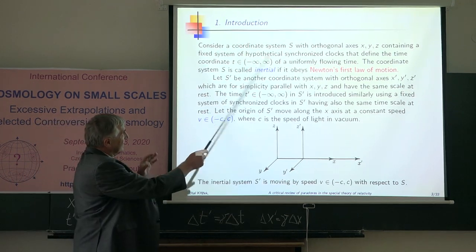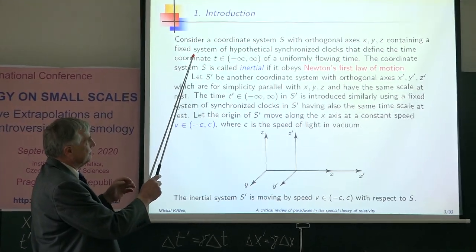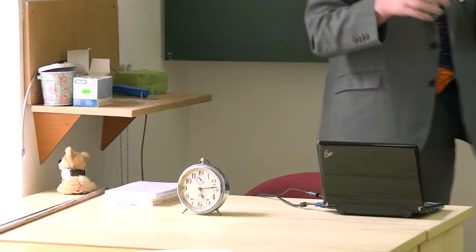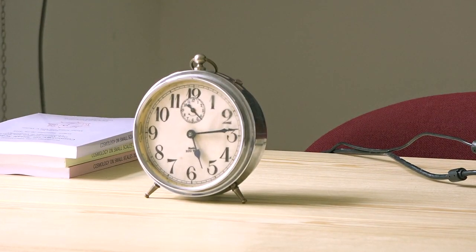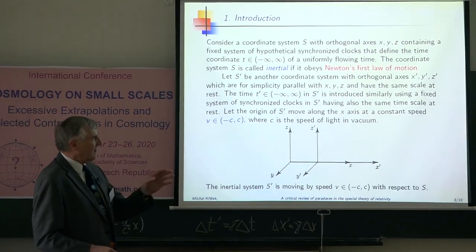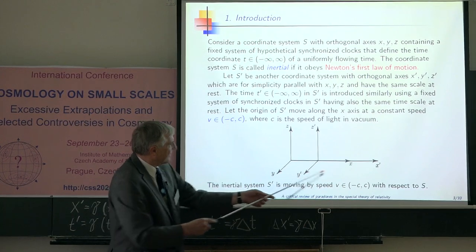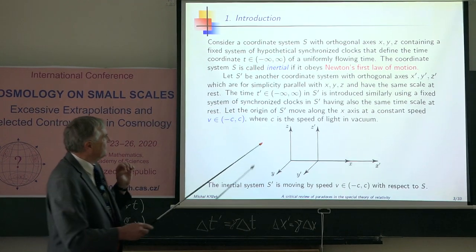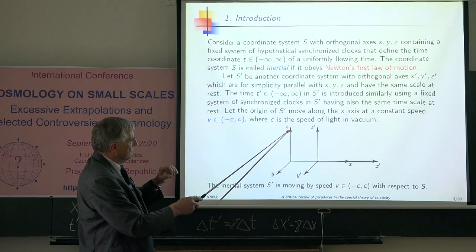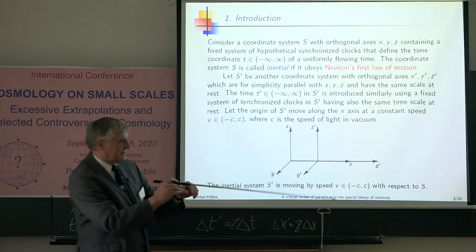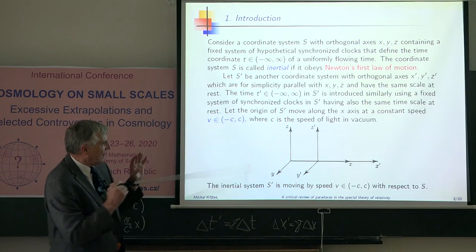We shall consider standard coordinate system S, which contains synchronized clocks. This means that all clocks in the space show the same time. They would be synchronized by infinite speed of signal. The coordinate system is called inertial if it obeys Newton's first law of motion. Then I shall have another system, x prime, y prime, z prime, which moves by constant speed v. All these axes have uniform scale, and the speed of this system S prime will be in this open interval.